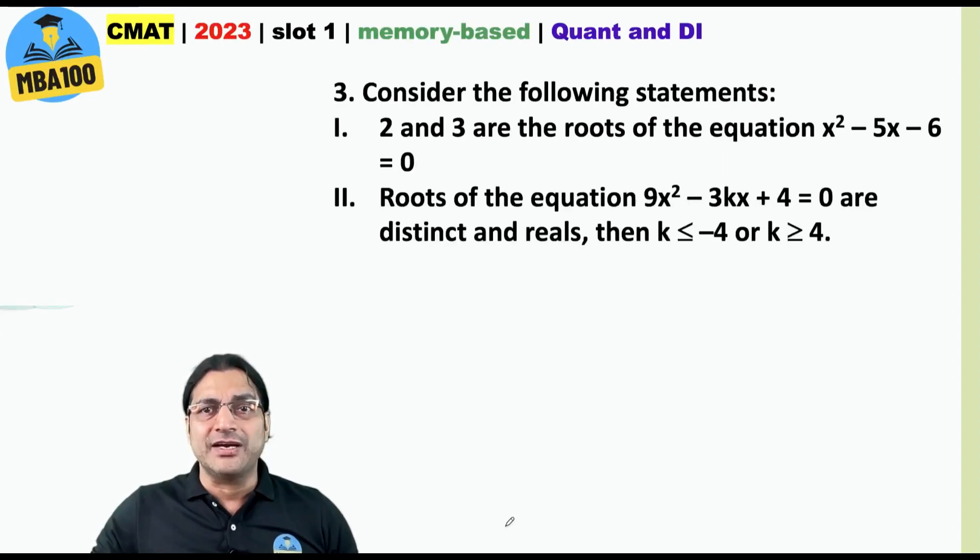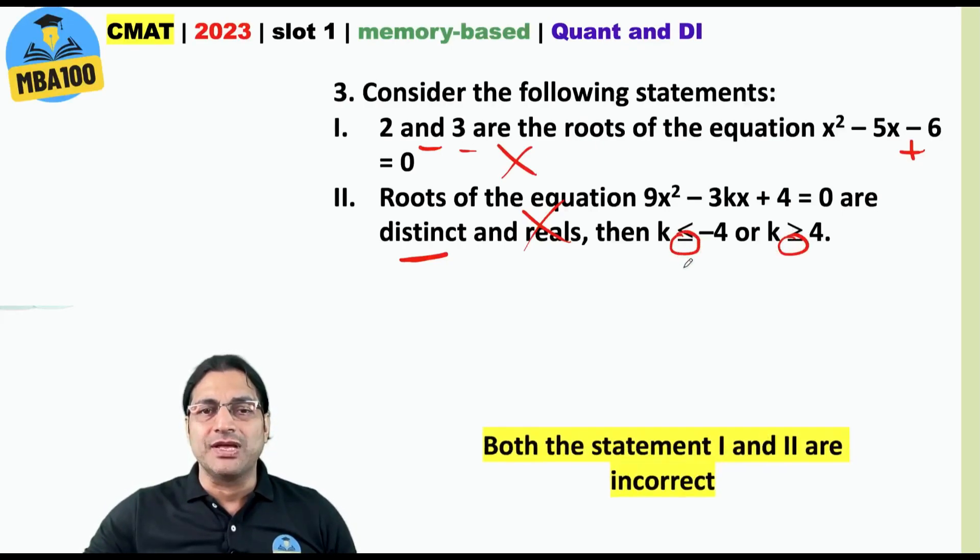Consider the following statements. Now this is incorrect of course because 2 and 3 are the roots then this should have been plus 6. This also is incorrect because here is very clearly given that the roots are distinct. If the roots are distinct then we cannot have this equality sign. So here the answer is both the statements 1 and 2 are incorrect.